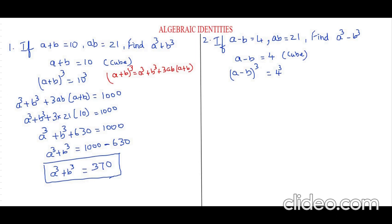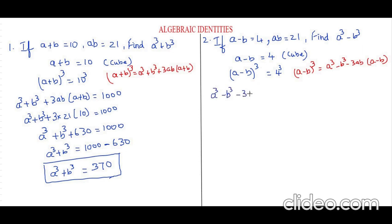Now let's apply the identity. The identity is: a minus b whole cube equals a cube minus b cube minus 3ab times a minus b. It is the same identity — only in the place of plus, we change it to minus sign. This identity's derivation is also there in my videos; you can refer that. Applying it: a minus b whole cube is a cube minus b cube minus 3ab times a minus b, equals 4 cube, which is 64.